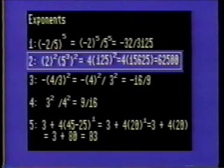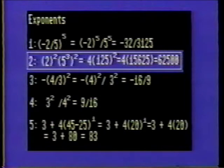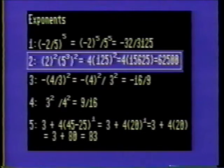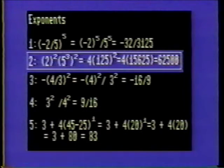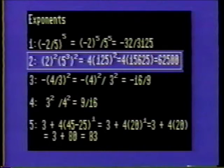Number 2. This problem is different from the others because it raises a power to a power. The second component, 5 cubed, or 5 to the 3rd power, contains two levels of exponents. Solve the innermost part first. 2 squared is 4, and 5 cubed is 125. Now we have 4 times 125 squared. 125 squared is 15,625, and 4 times 15,625 is 62,500.